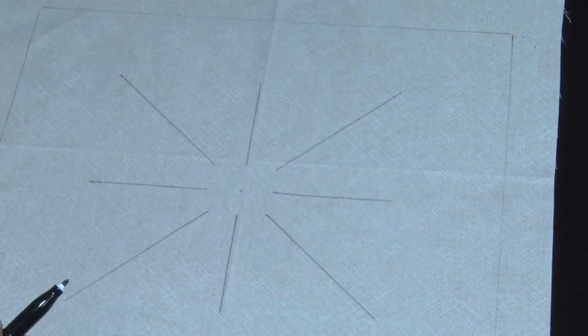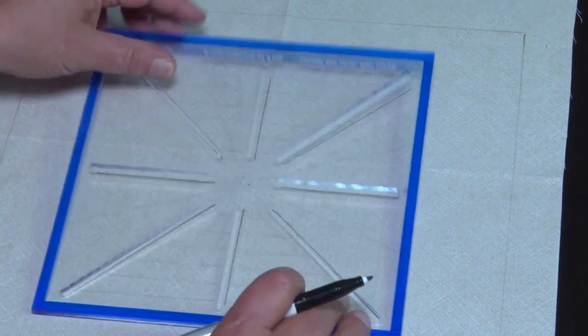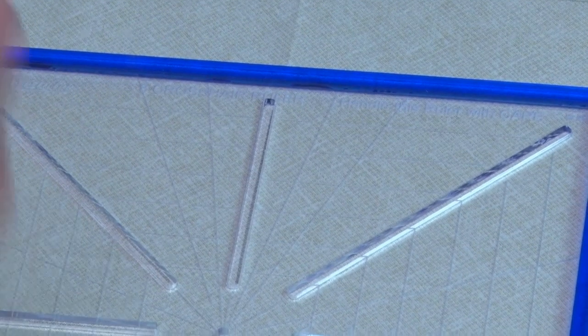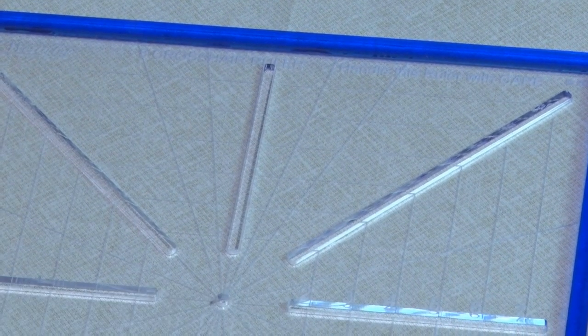There's my eight reference lines marked in very easily. I'm now going to turn this ruler, keeping that center point that I marked in the middle in place.